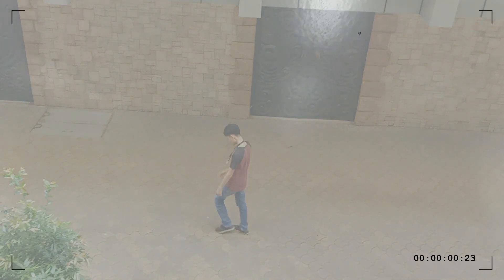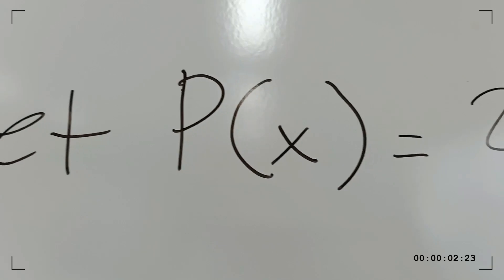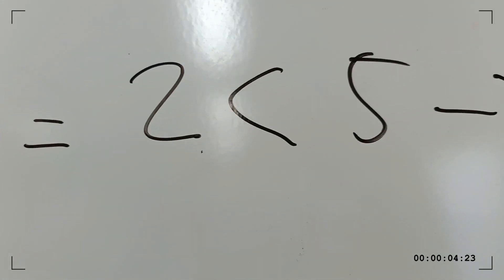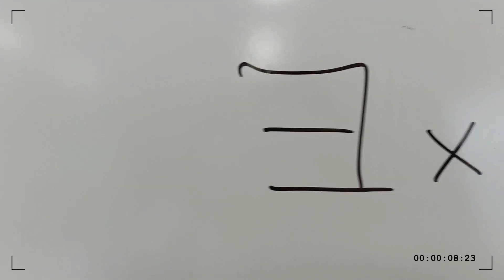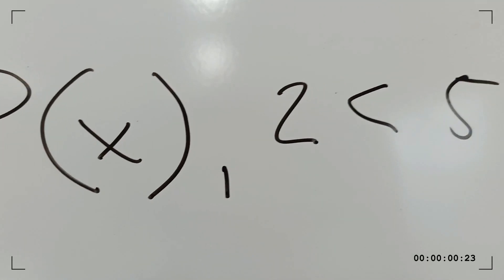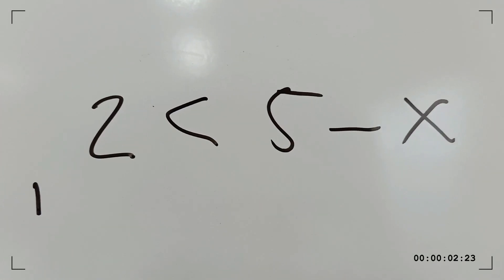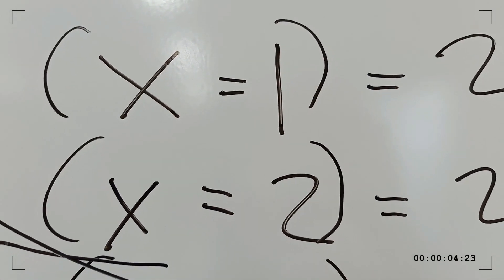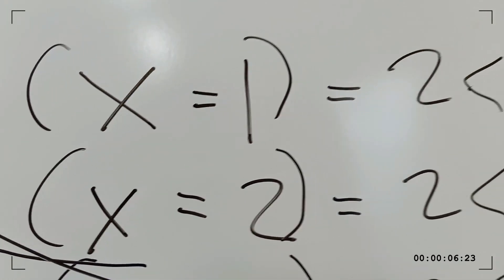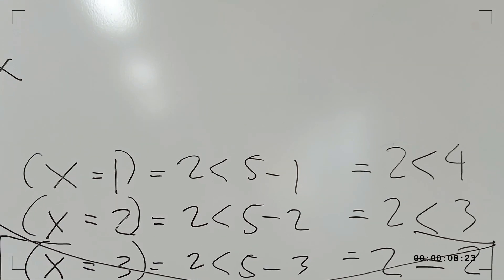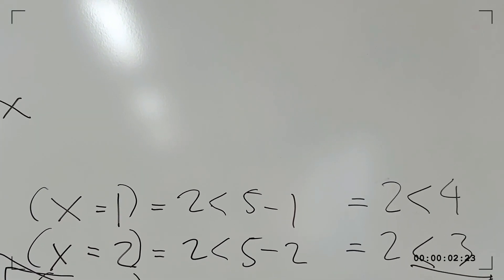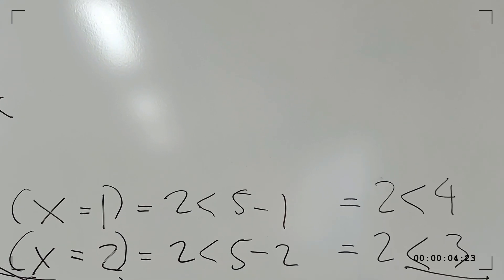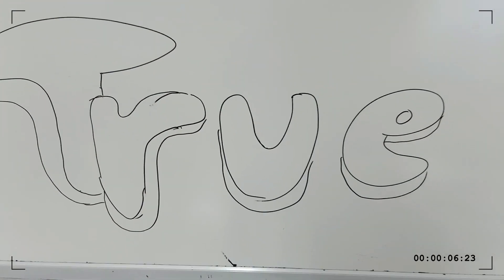Another example: let P(x) be '2 is less than 5 minus x.' For some x in P(x), if x equals 2, then 2 is going to be less than 3. Therefore, this notation has a truth value of T, or simply true.